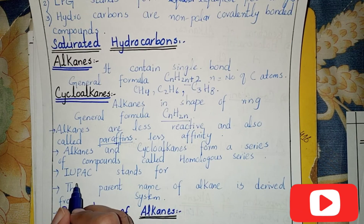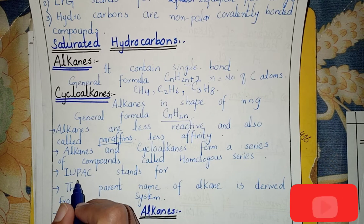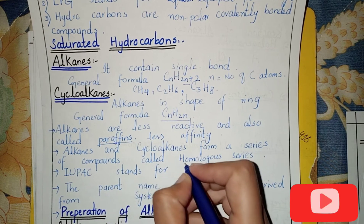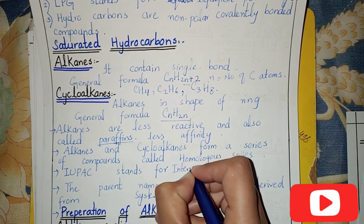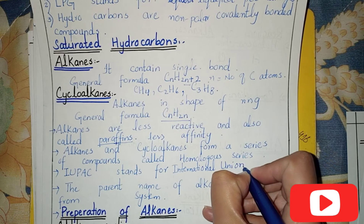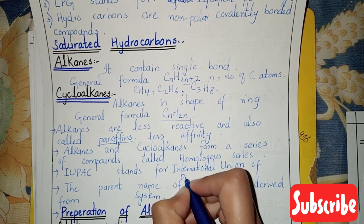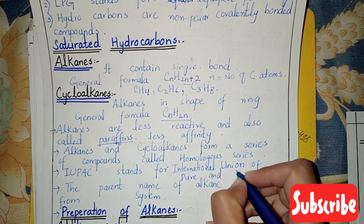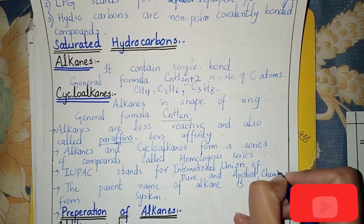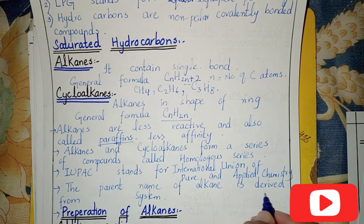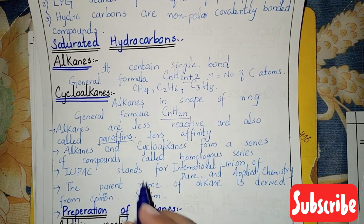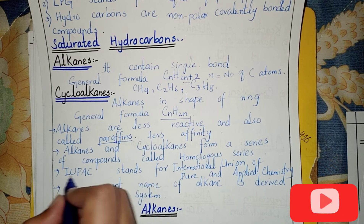There is an international standard of naming compounds, and that standard is called IUPAC. IUPAC stands for International Union of Pure and Applied Chemistry. The parent name of alkane is derived from the common system and the IUPAC system.